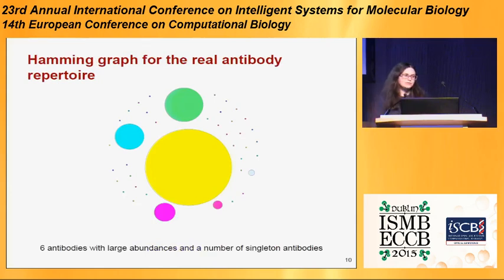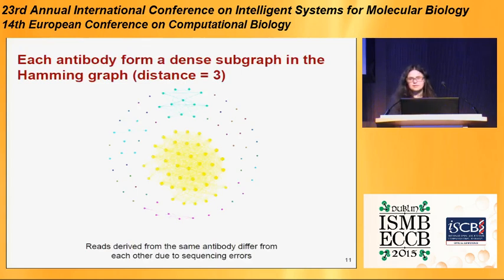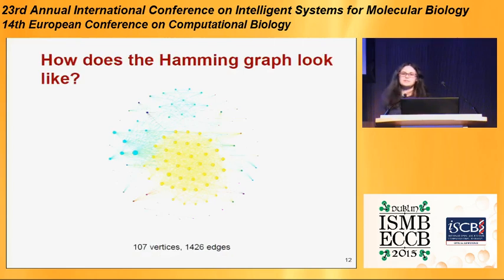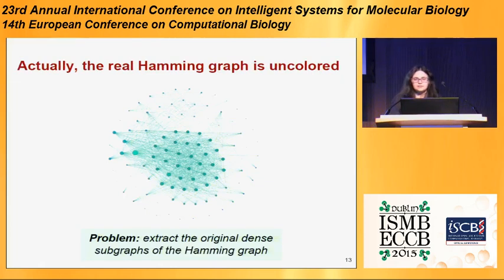Let's look at an example. Here you can see an antibody repertoire with six antibodies with large abundances and a number of small antibodies with single occurrences. Here's the Hamming graph, and reads corresponding to identical antibodies form some dense components. Due to sequencing errors, there are not cliques and some edges are missed. But reality is much more complex since some similar antibodies will be connected by edges too — and that's what we observed in practice. We don't know the colors, so our problem is to extract the original dense subgraphs of this Hamming graph.